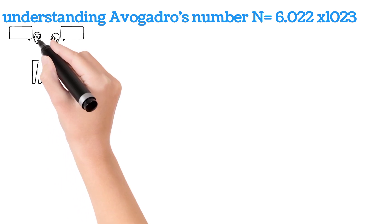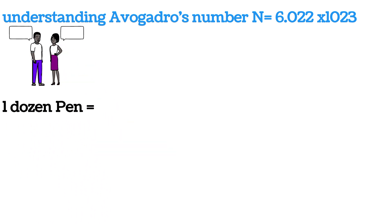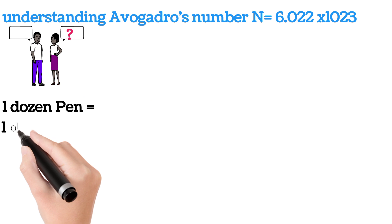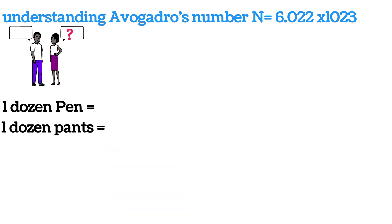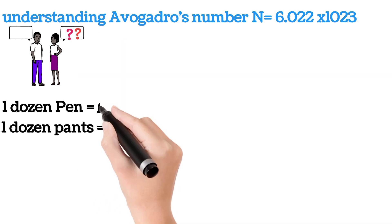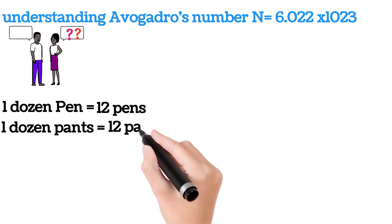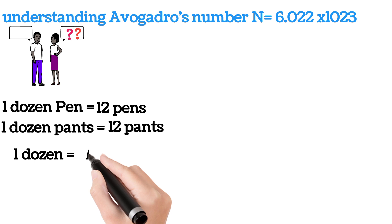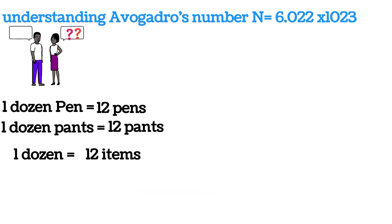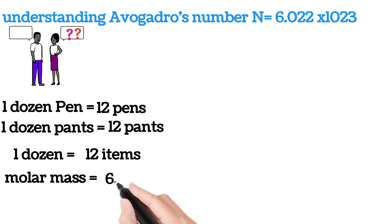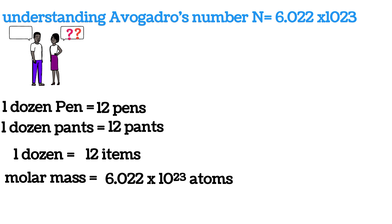Let's try to understand Avogadro's number — 6.022 × 10²³. If I ask you how many items are in one dozen pens, you should be able to answer: one dozen of pens equals 12 pens. One dozen of anything is equivalent to 12 items. In the same way, one mole of anything is equal to 6.022 × 10²³ particles.